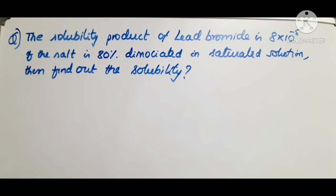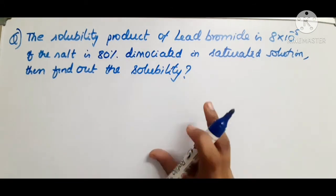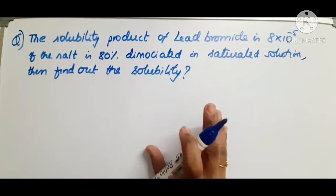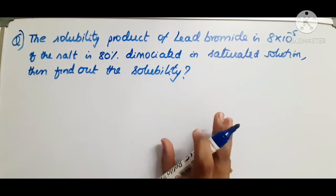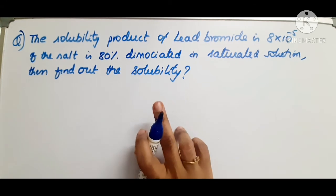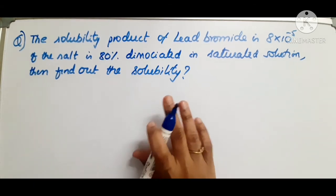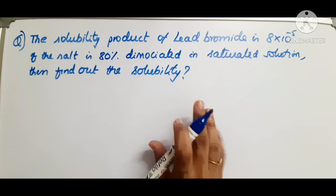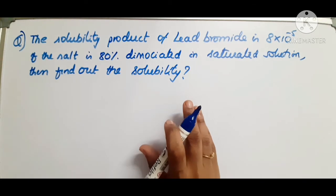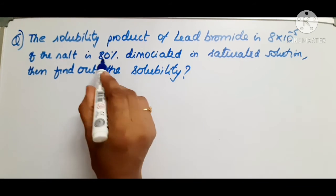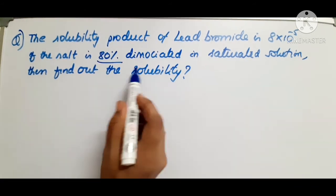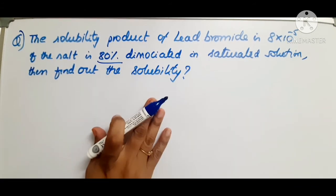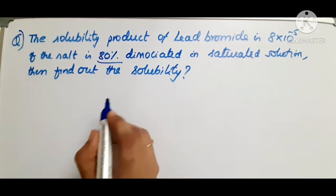Another example: the solubility product of lead bromide is 8 × 10⁻⁵. If the salt is 80% dissociated in saturated solution, find the solubility. You have to find solubility from the given Ksp. Instead of ion concentration, the degree of dissociation is given — 80% dissociated. The first step is to write down the equation.